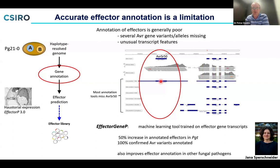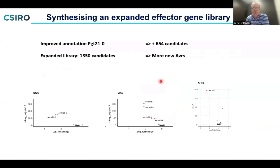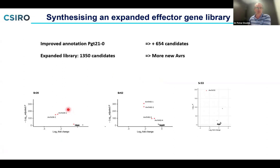Armed with that improved annotation, we re-synthesized an expanded library adding another 650 or so candidates — now an expanded library of 1,350. We went back and screened the R genes where we found no positives in the first round, and are now finding positives: SR26 — a couple of AvrSR26 candidates; SR62 — several recognized by SR62; and SR33. These three were not detected in the first screen and were not annotated in the original annotation.